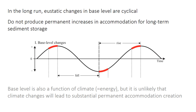You've previously learned about base level and how cycles in base level create or destroy accommodation space. In the simplest case, where these base level changes are caused by rising and falling sea level — eustatic or global sea level — the long-run outcome doesn't result in any permanent creation of accommodation space for sediment storage. Rising sea level creates accommodation space allowing sediment deposition, but then falling sea level destroys that accommodation space and erodes the sediments.